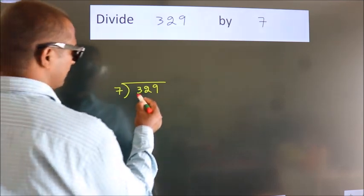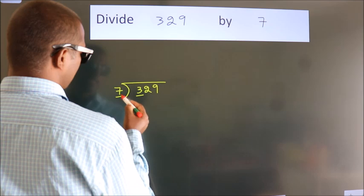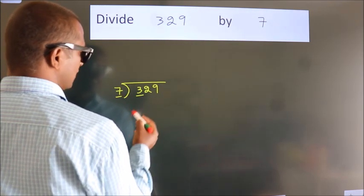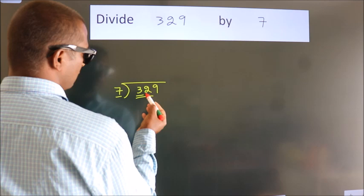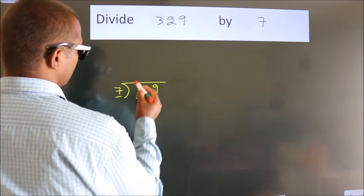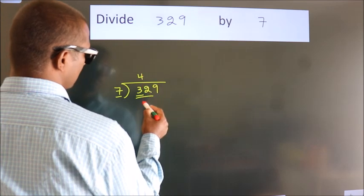Next, here we have 3, here 7. 3 is smaller than 7, so we should take 2 numbers: 32. A number close to 32 in the 7 table is 7 fours, 28.